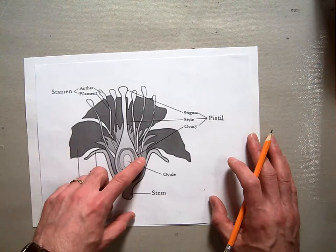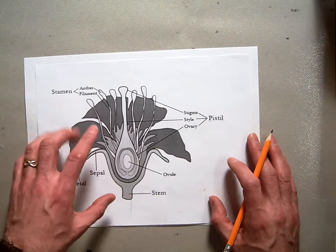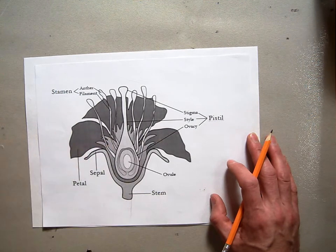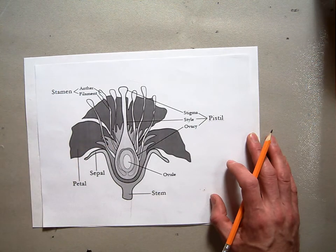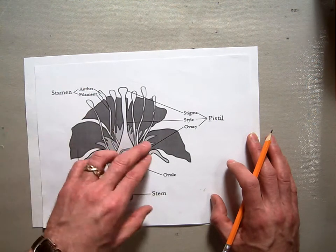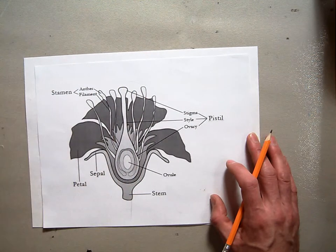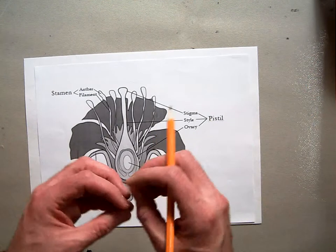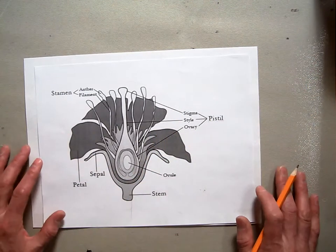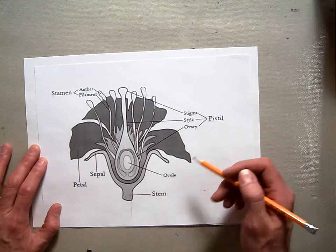It also provides sweet stuff so that the bees, other insects, and birds come to pollinate. And then once the insect leaves one flower and goes to the next, it cross-pollinates and creates the seeds for the flowers for next year.